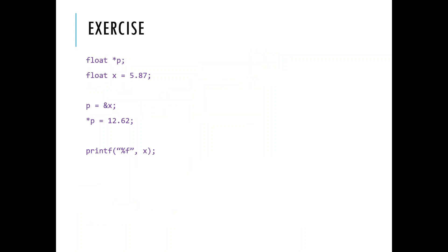So normally when I make a pointer I want to set it to something — my default is to set it to null, but I could set it to point to some other thing. The key is I must make sure I set it.